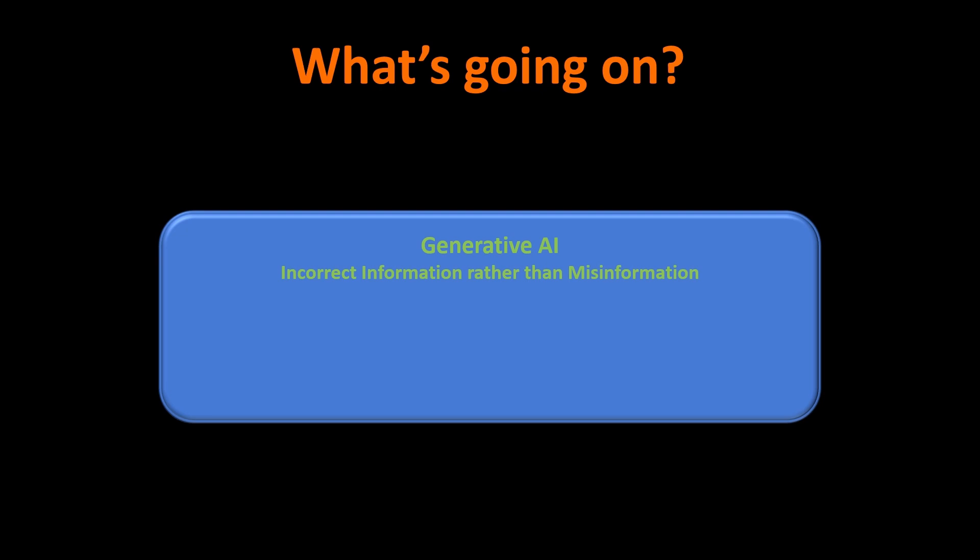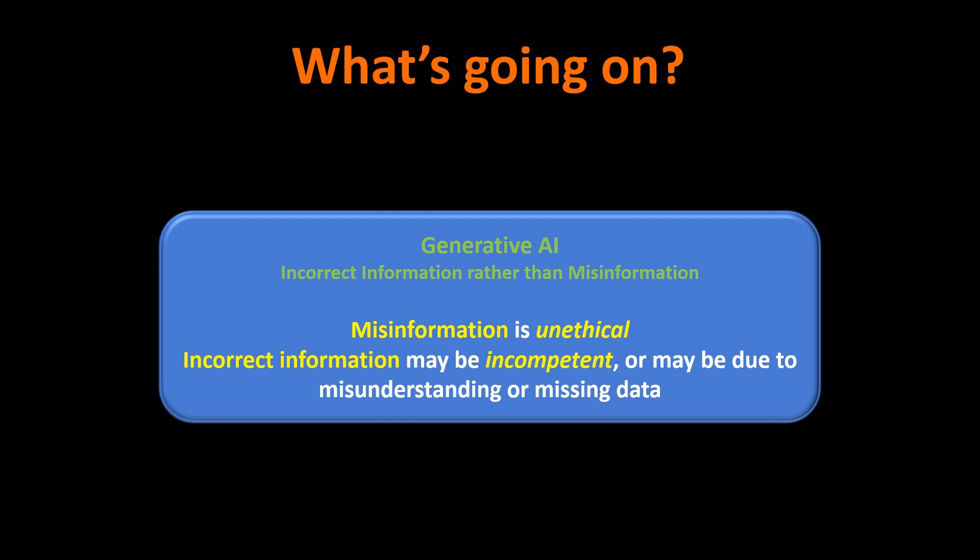There's incorrect information and there's misinformation — misinformation is unethical and intentional. AI doesn't have intent; I believe it was just giving incorrect information. It was inconsistent, contradictory, and incorrect, which may mean it's incompetent. We have to make that distinction between misinformation and incorrect information. I think it's incorrect information, though some of the reason they're not looking into it closely may be motivated by a pro-statin bias.